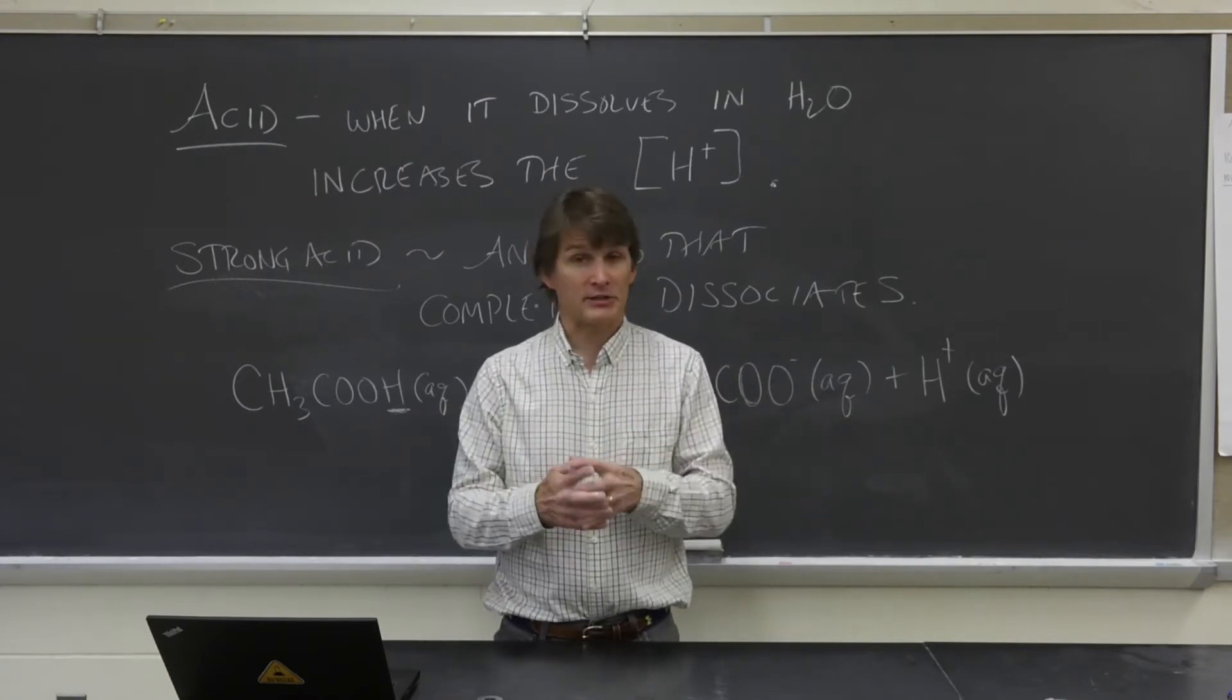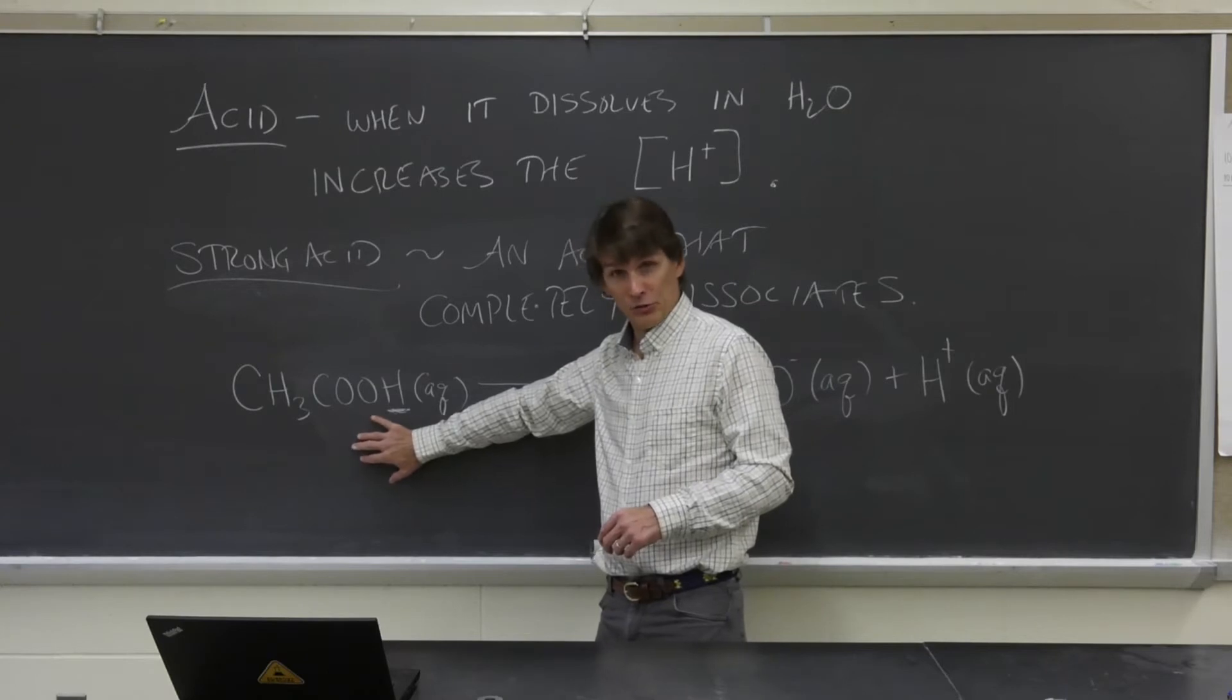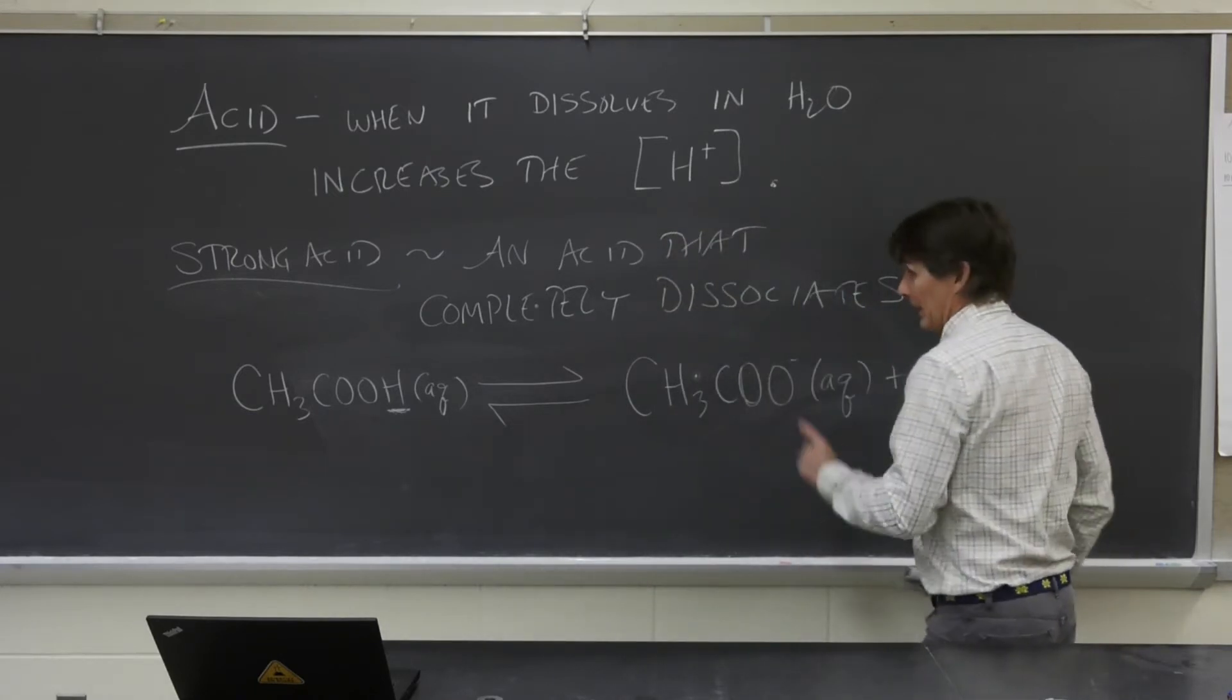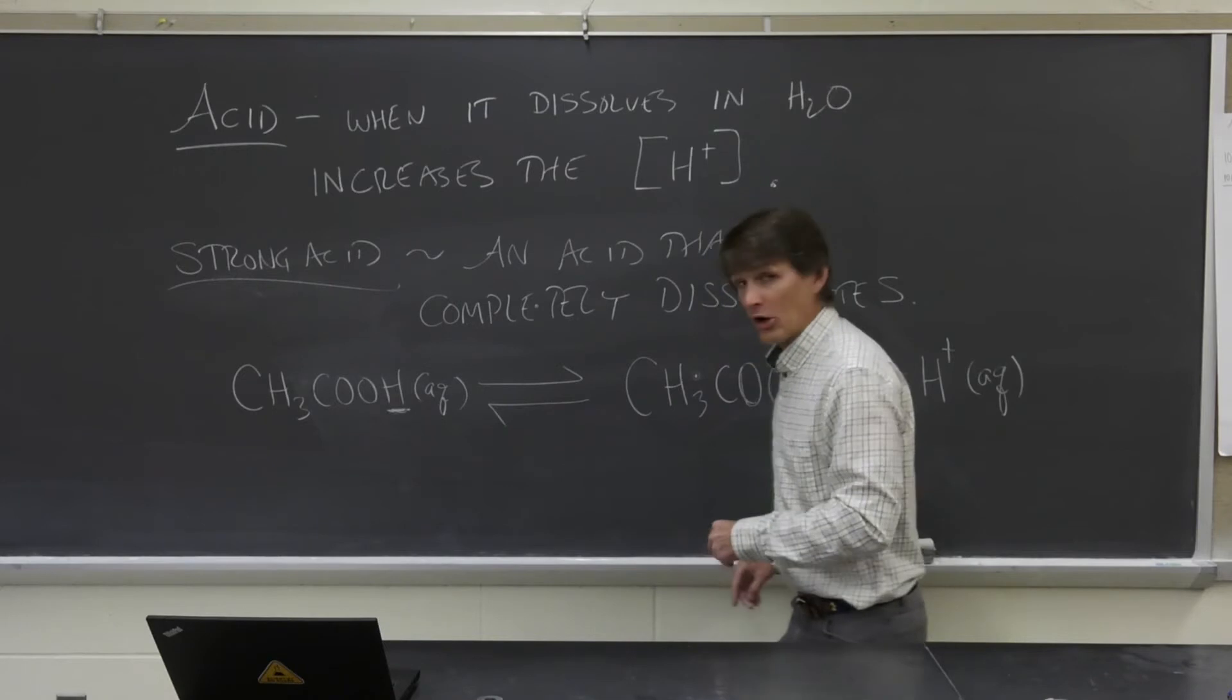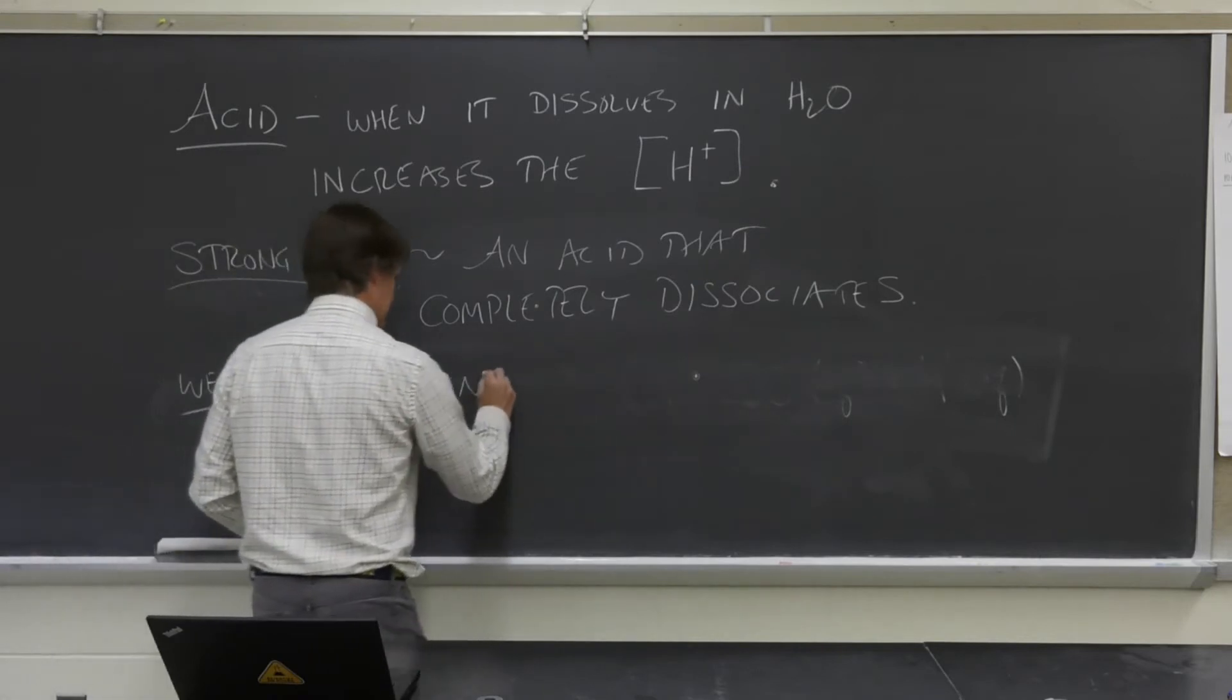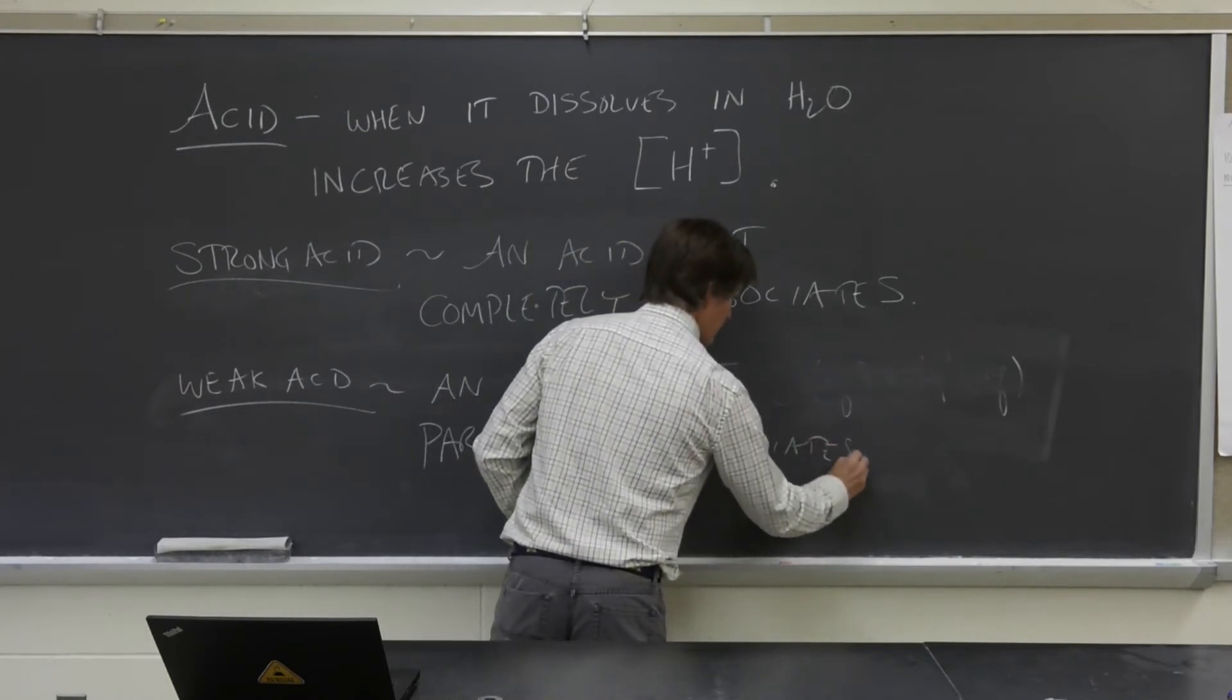What happens is a certain ratio gets established as the reaction happens in both directions at the same time. There's a certain ratio where this levels off, and that turns out to be about, if I remember correctly, about 1% of these dissociate to form this, and the other 99% stay like this, roughly speaking. Because acetic acid only partially dissociates, and that's indicated by this, we call it a weak acid. So a weak acid is an acid that partially dissociates when it's dissolved in water.